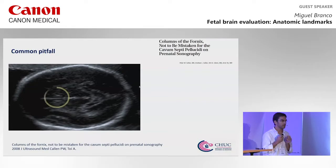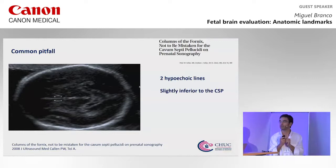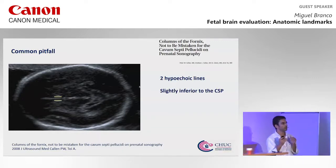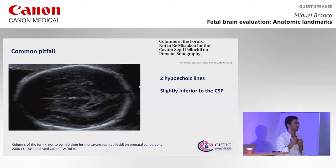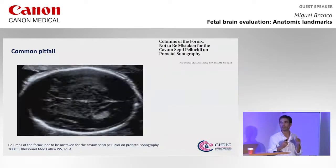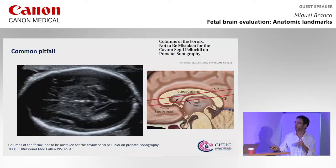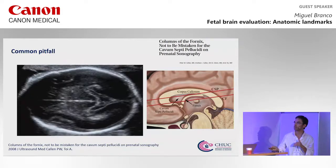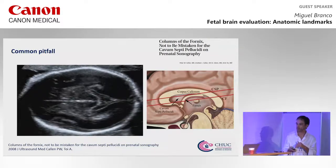There is a common pitfall: mistaking the columns of the fornix for the CSP. The columns of the fornix are two hypoechoic lines without fluid inside and they don't interrupt the interhemispheric fissure. In reality they are a little bit below the level of the cavum septum pellucidum. Here you can see the columns and the cavum.